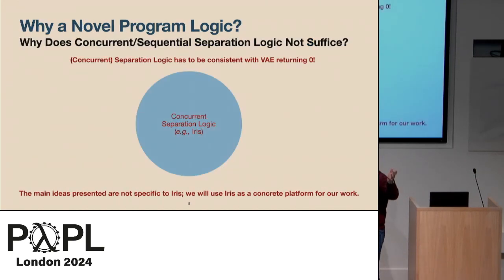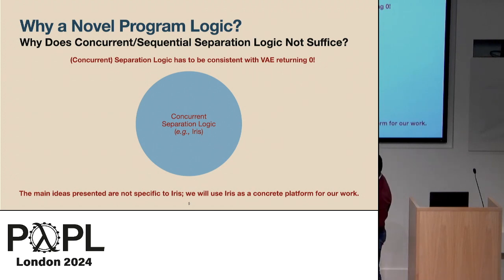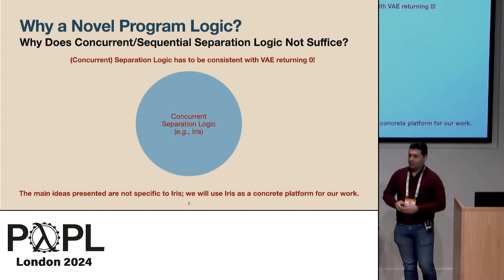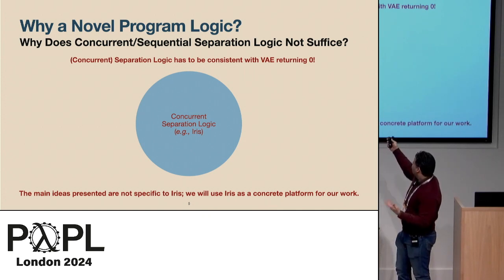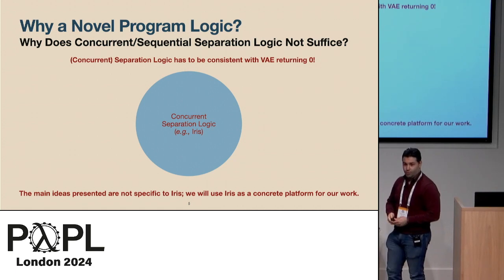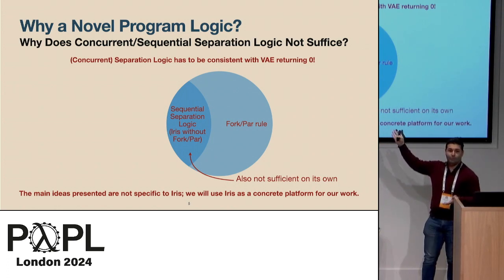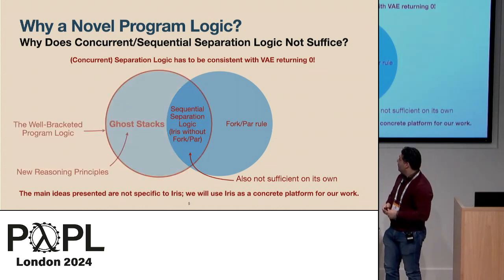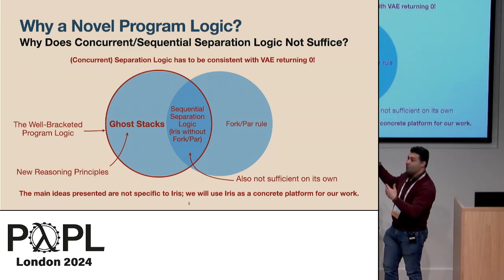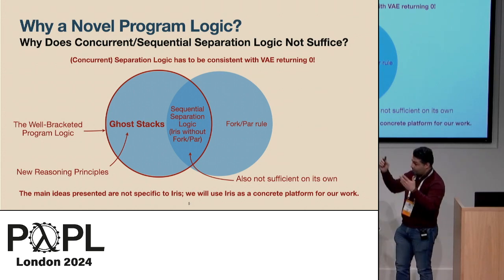Why do we need a new program logic? Why couldn't we do this in an existing logic like Iris, a concurrent separation logic? A concurrent program logic like Iris has to be consistent with the concurrent execution that returns 0, so it cannot prove the program returns 1. And if you look at the sequential fragment of the logic, we still cannot prove 1, because it has to be consistent with adding concurrency. So we introduce a new program logic with new reasoning principles, which we call ghost stacks, that allow you to reason about well-bracketedness.